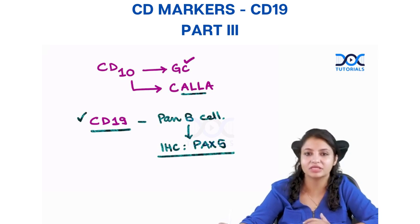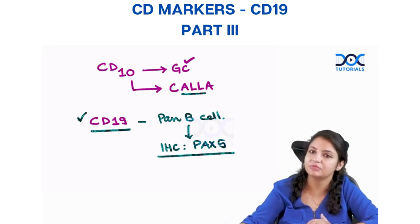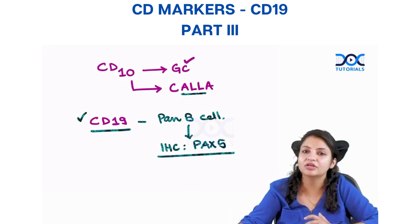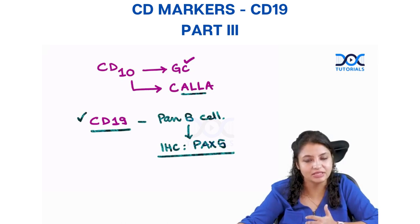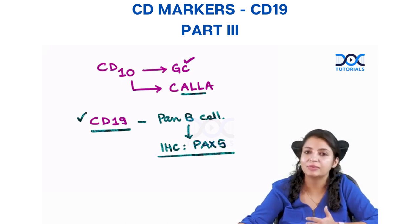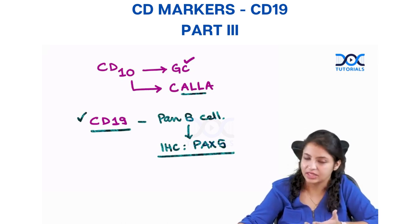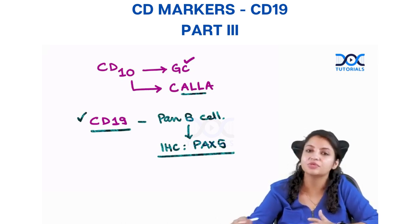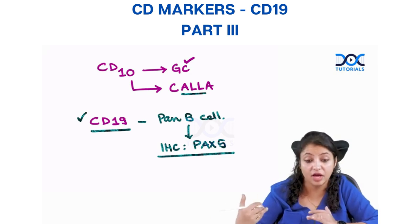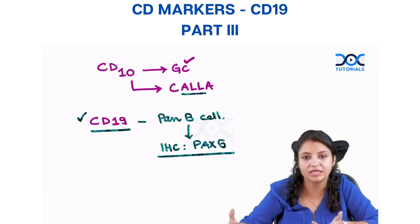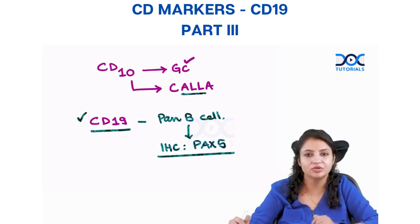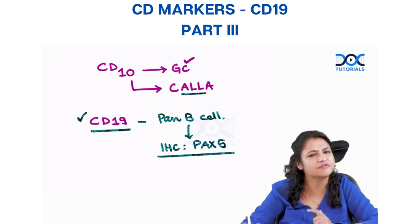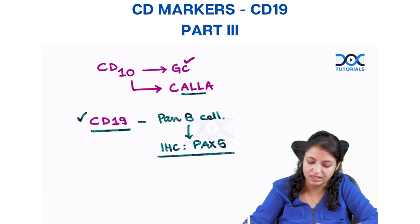All the B cells, till the time they are B cells, will be PAX5 positive. Only when they convert into plasma cells will B cells become PAX5 negative. So PAX5 is one of the markers which is always present in B cells. If you have to identify B cells, you can use PAX5 on IHC, which is considered a very good marker of B cells.